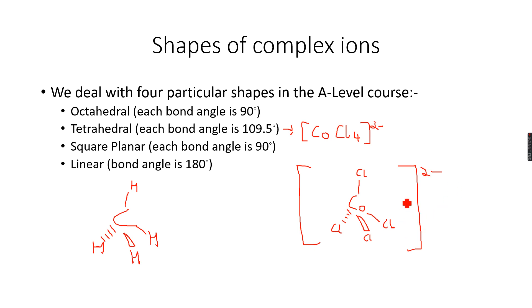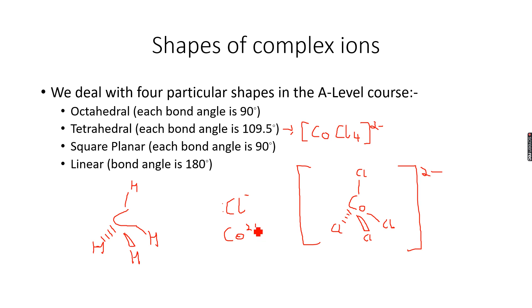It has a charge of 2 negative because the ligands here are Cl⁻ ions. Cl⁻ ions have a lone pair of electrons which they donate to the central Co²⁺ ion. So our central metal ion is Co²⁺, and our ligands are Cl⁻ ions that donate a lone pair.